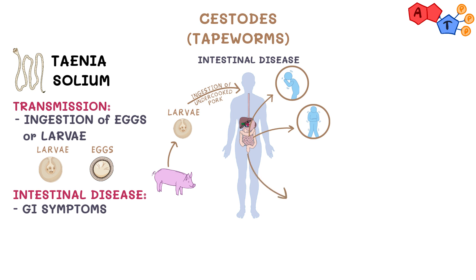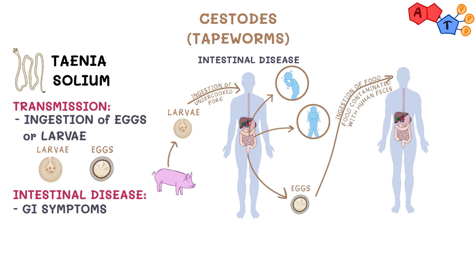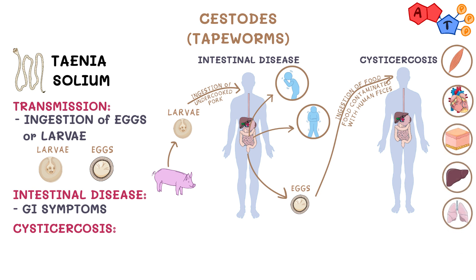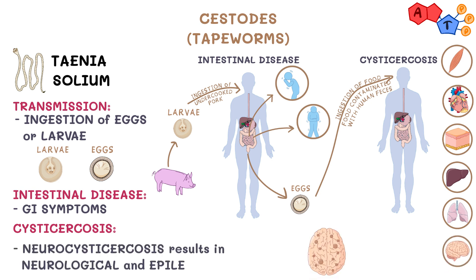On the other hand, ingestion of eggs from food contaminated with human feces can lead to cysticercosis. Symptoms of cysticercosis may vary and depend on the location of infected tissue and the number of larvae. It can affect skeletal muscle, heart, skin, liver, lung, or other tissues. It can also reach the brain to cause neurocysticercosis, leading to serious neurological and epileptic complications.